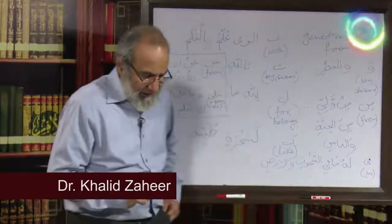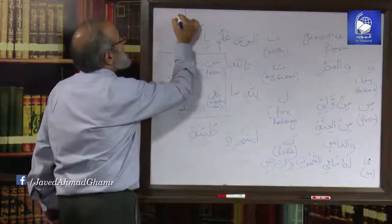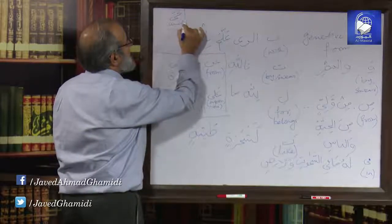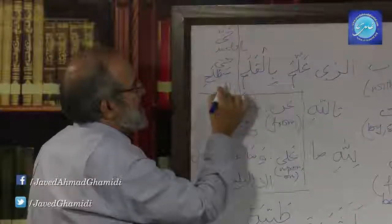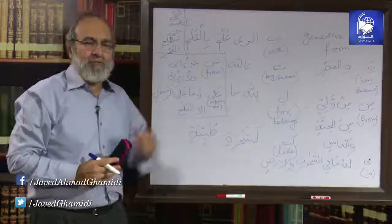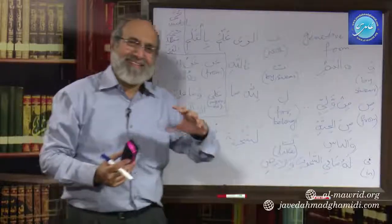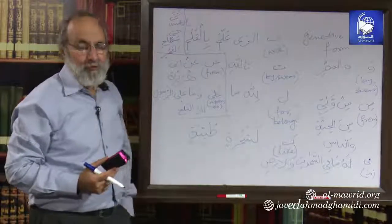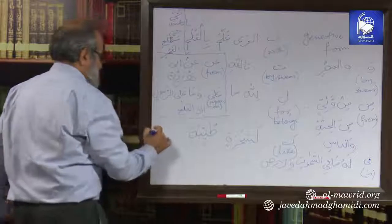Then we have Hatta, which means 'until'. For example: 'hatta matla'il fajr' — 'until the rise of dawn.' Matla', meaning 'the rise,' is immediately preceded by Hatta and has appeared in the Jar i'rab form, the genitive case.